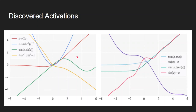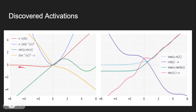All of the discovered functions are unbounded on the positive side. Some have positive and some negative regions. One curve follows a sine wave because its equation is the minimum of x and sine of x. On the negative side, some are bounded and some are unbounded.